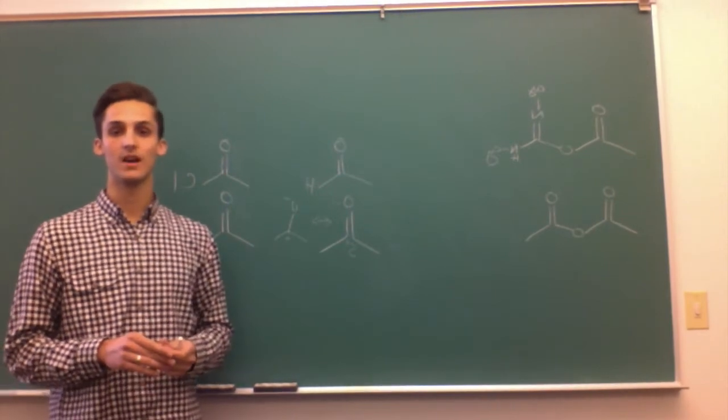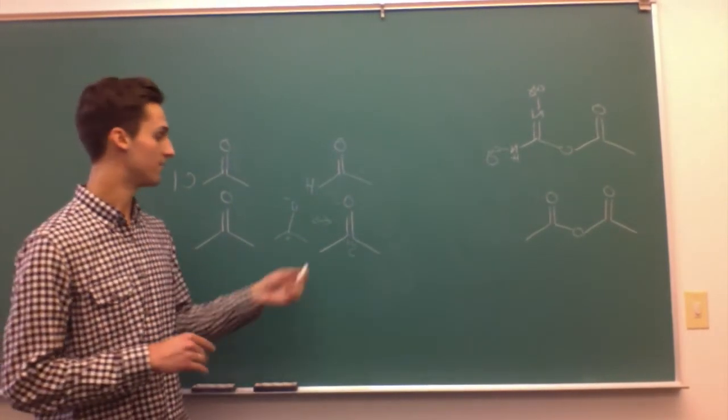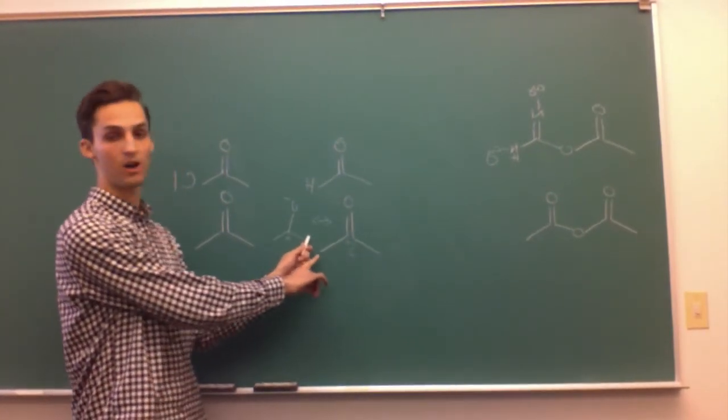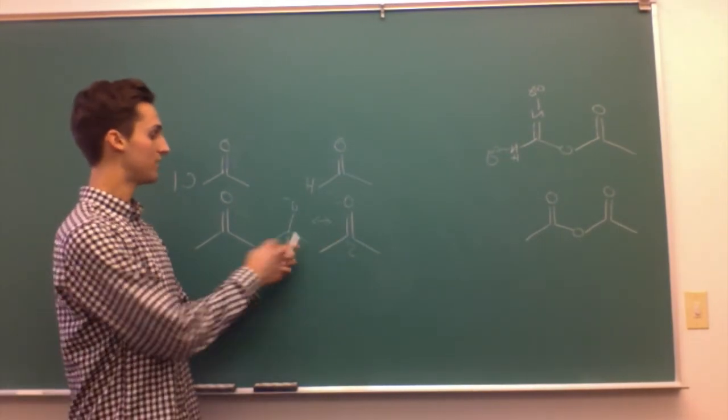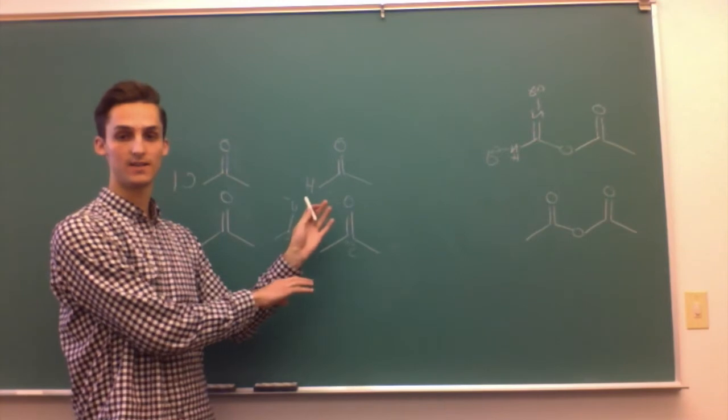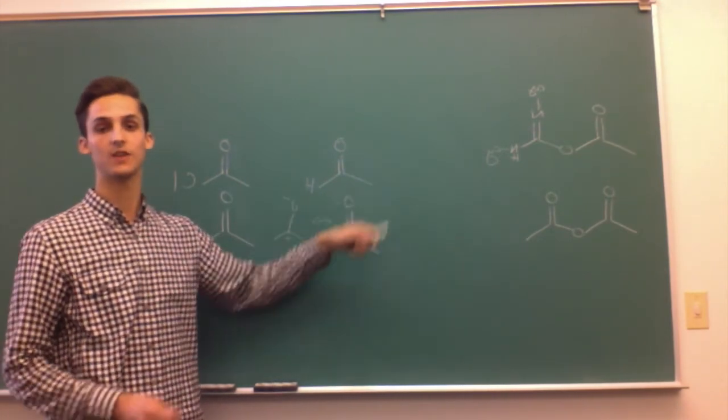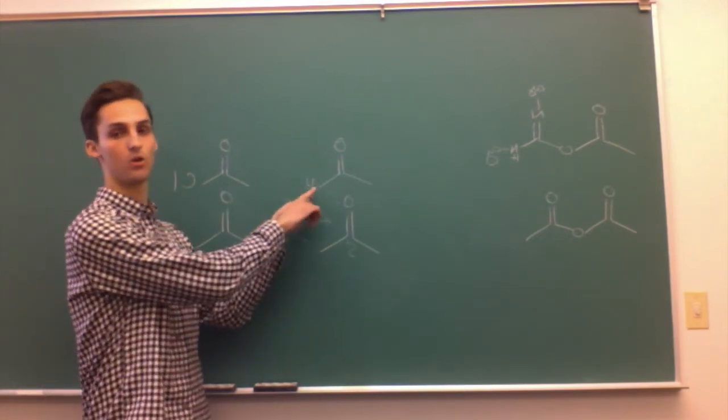And it's simply because of hyperconjugation from these CH3s. So in this molecule right here, the hydrogens are hyperconjugating into the CO pi star LUMO. So with that, that helps stabilize the LUMO. In the aldehyde, we only have one CH3 where those hydrogens can hyperconjugate into the LUMO, making the aldehyde more electrophilic.